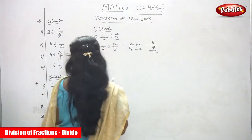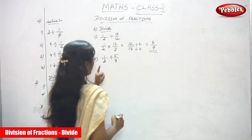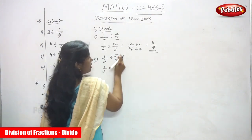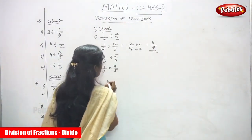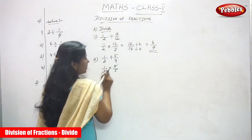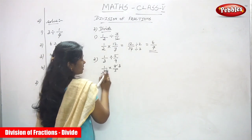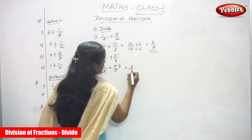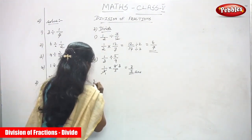Second sum: 1/3 divided by 5/9. Write 1/3 as it is (dividend). Take the reciprocal of the divisor 5/9 to get 9/5. Now cross-cancel: 3 and 9 share a common factor of 3, so 9 ÷ 3 = 3 and 3 ÷ 3 = 1. Multiply: 1 × 3 = 3 and 1 × 5 = 5. The answer is 3/5, which is already in the lowest term.